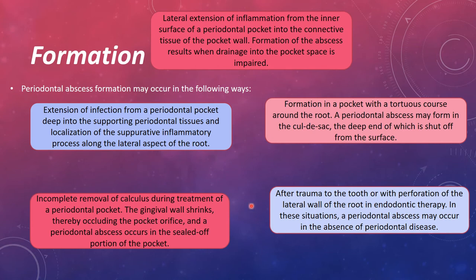Periodontal abscess formation may occur in the following ways. First, lateral extension of inflammation from the inner surface of the periodontal pocket into the connective tissue of the pocket wall. The formation of abscess results when drainage into the pocket space is impaired — if the inflammation spreads from pocket to connective tissue and is not drained properly, the resultant abscess will form.